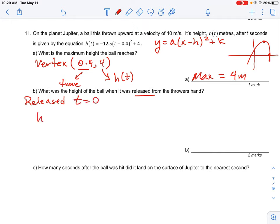So what we're really looking to do is find the height of the ball at time 0, so h(0). So we plug that number into our equation, t equals 0, and we just evaluate the expression. So it's going to be negative 12.5 times (0 - 0.4)².